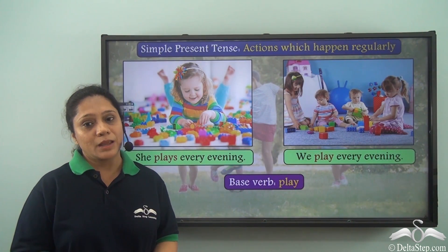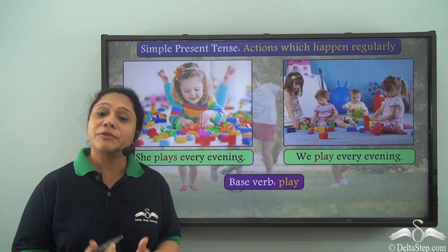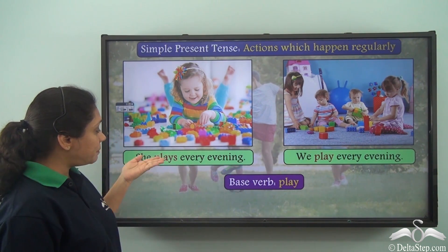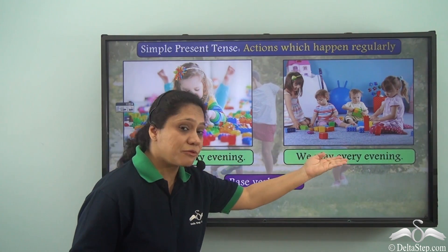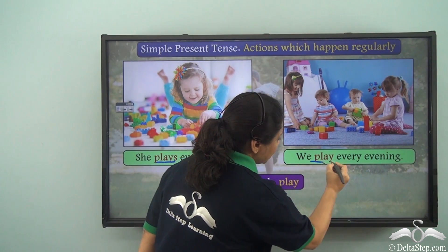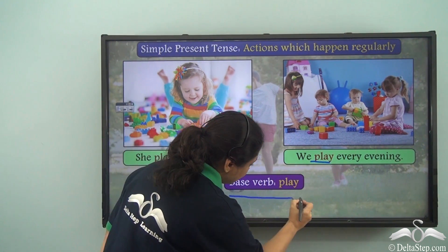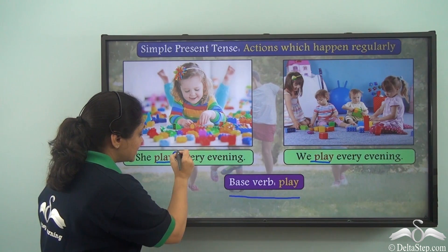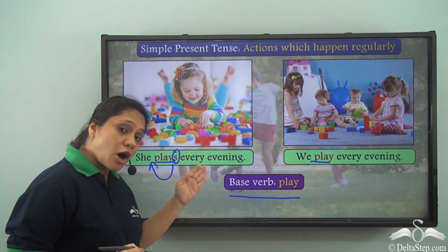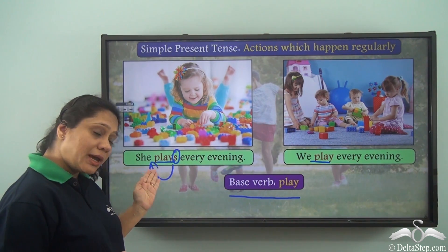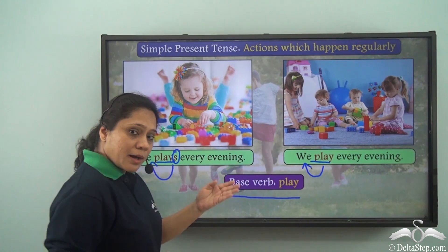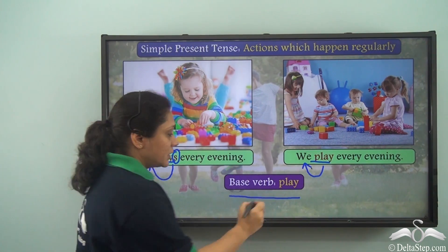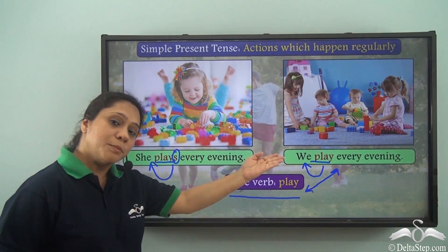Now both these verbs, plays and play, come from the same base verb. A verb in the simplest form without anything added to it is the base verb. So in these two sentences, plays and play come from the same base verb — play. The singular verb plays is used with she, and the plural verb play is used with we, which is the same as the base verb.